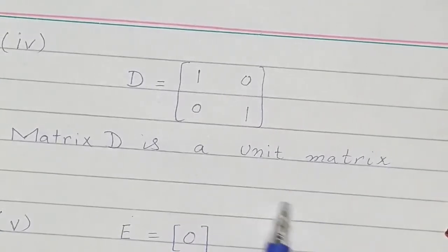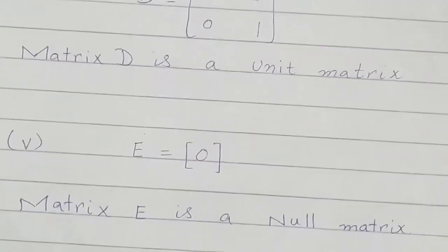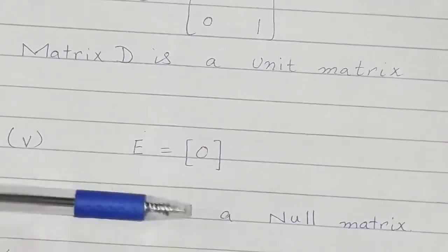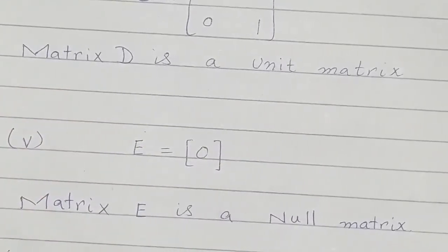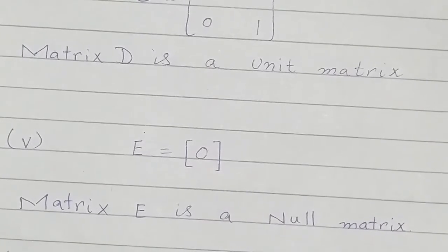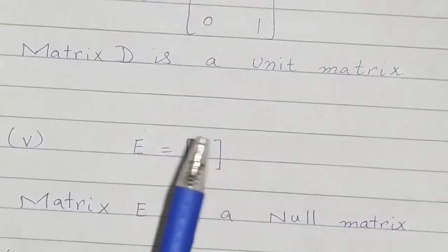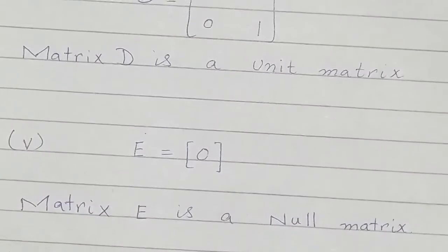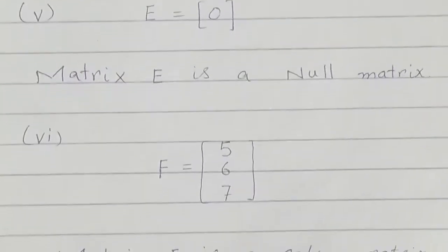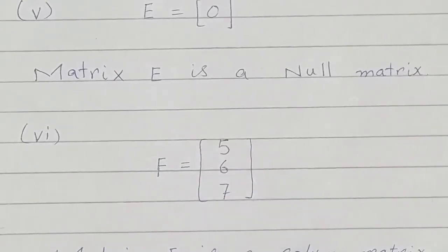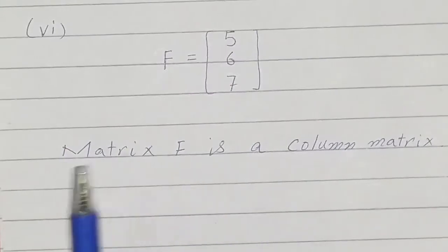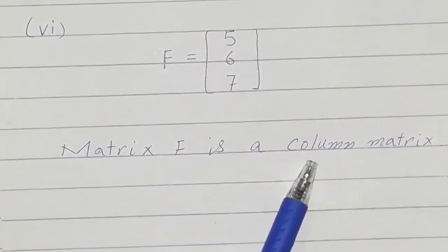Matrix E has zero as its only element, so it is a null matrix of order one — one row and one column. Matrix F has only one column, so matrix F is a column matrix.